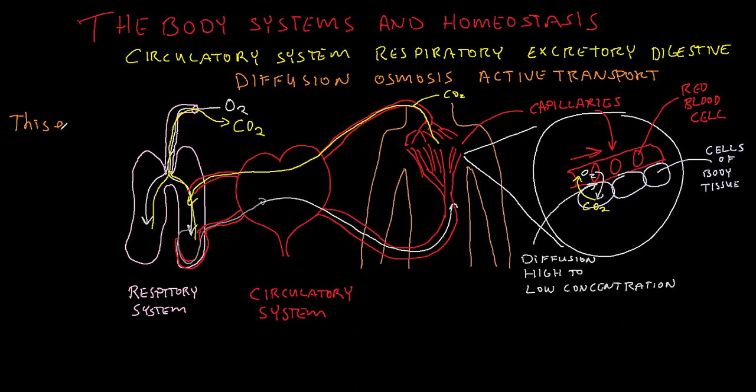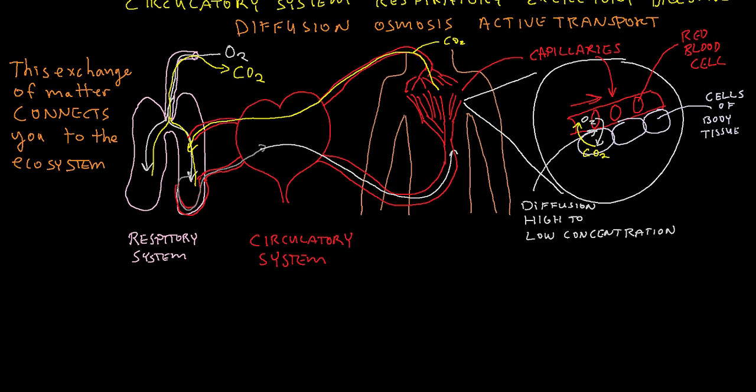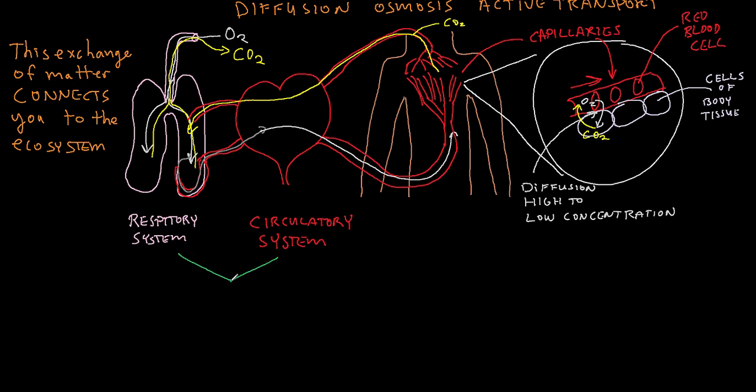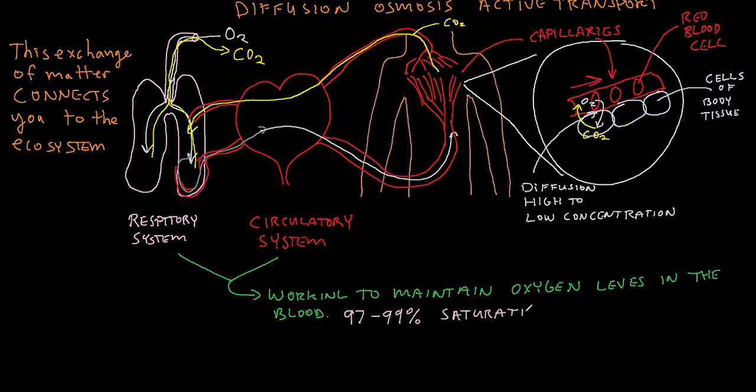That connects you to the ecosystem. You are connected physically to the ecosystem through the air molecules that you are breathing in and out. Those two systems are working to maintain your pulse oxygen level. A maximum of this is usually 97% to 99% saturation, meaning that your blood is carrying 97% to 99% of the capacity for oxygen. And that's where you want it to remain.